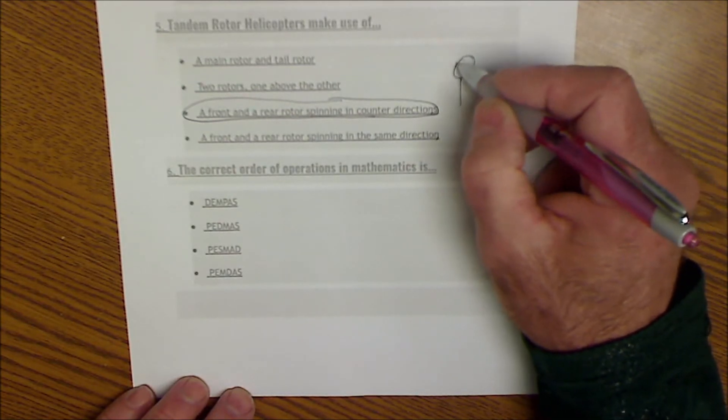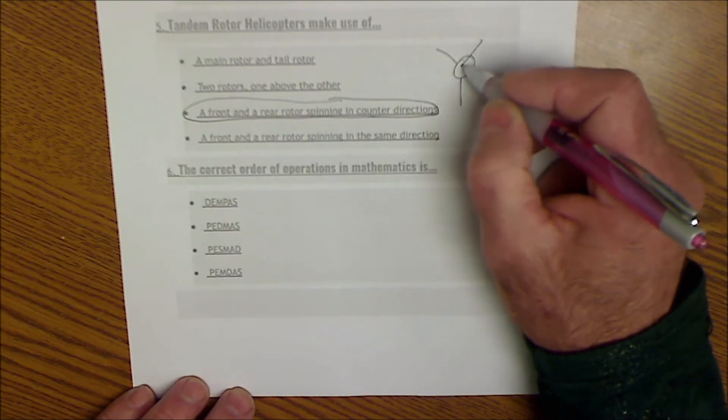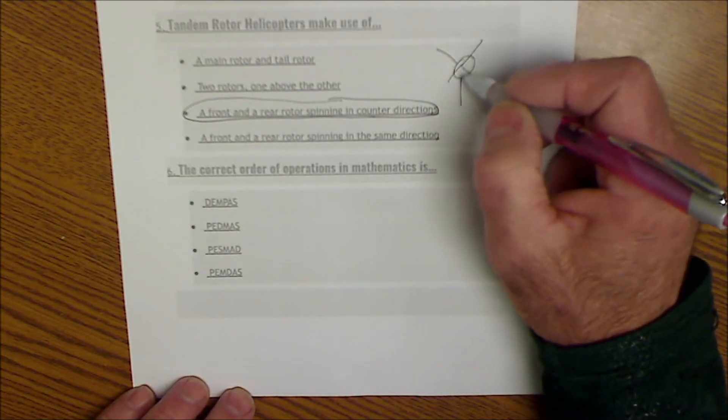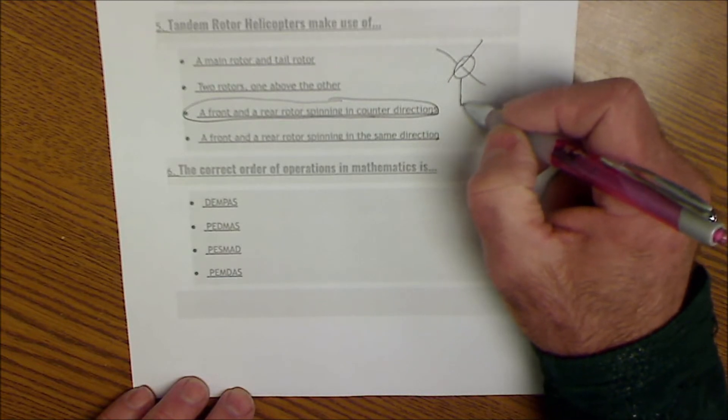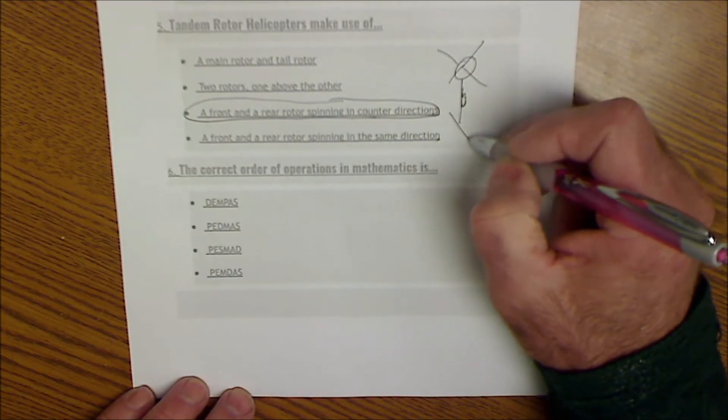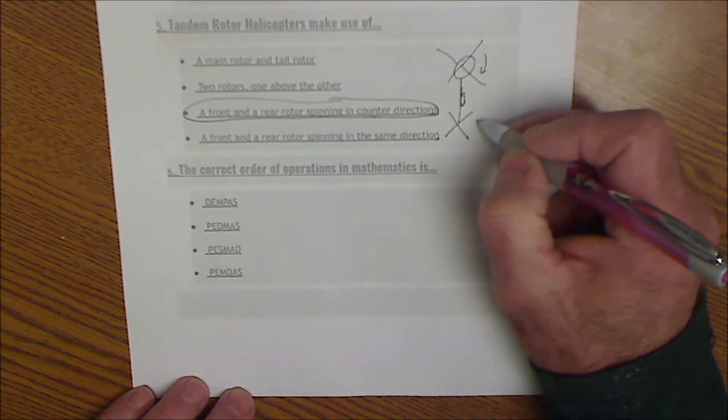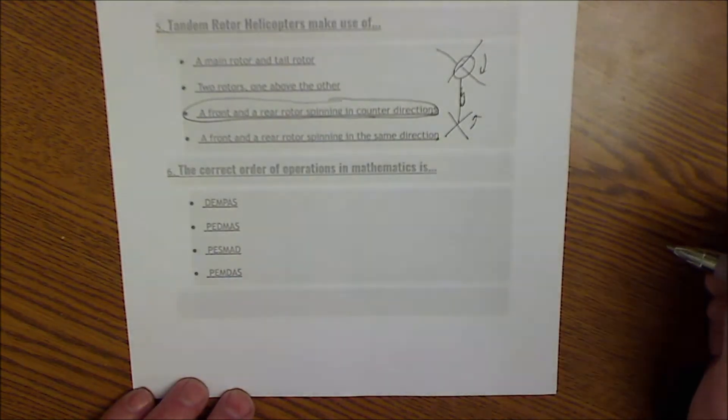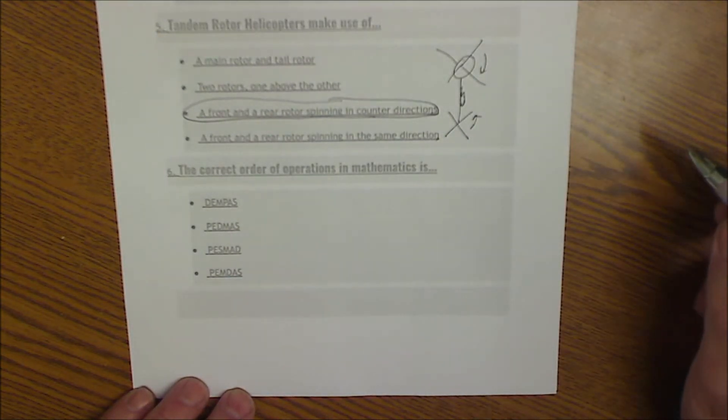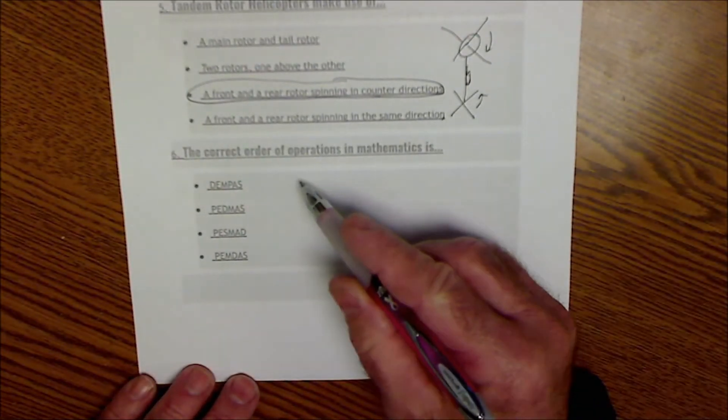Here's a helicopter. Here are the rotors going around. So if these things are spinning, the bird would want to spin the opposite direction, so that's what that tail rotor is for. But if you had two sets of rotors, one going this way and one going this way, they would counter the torque force.